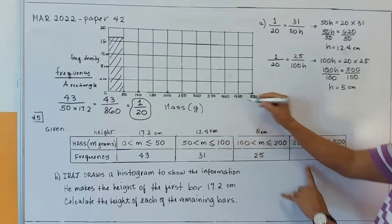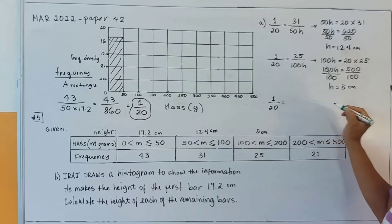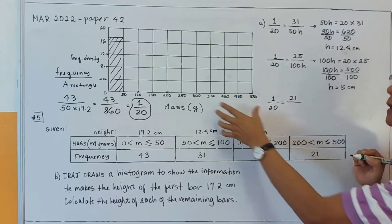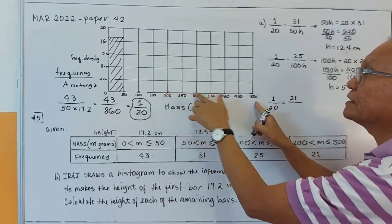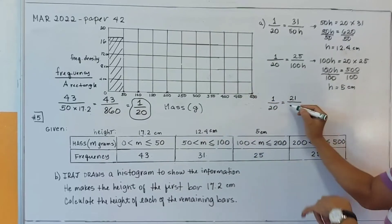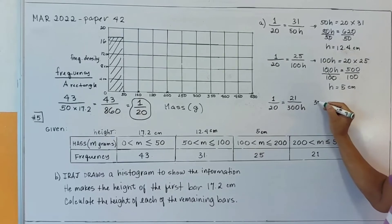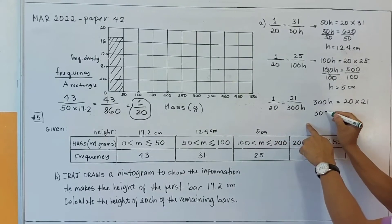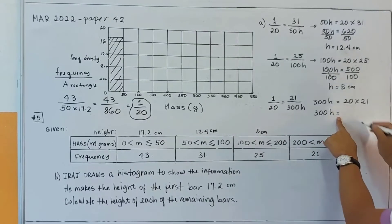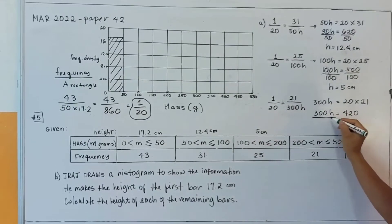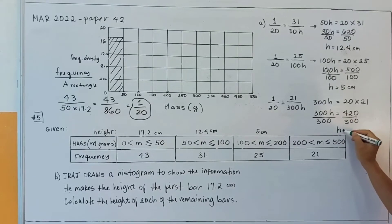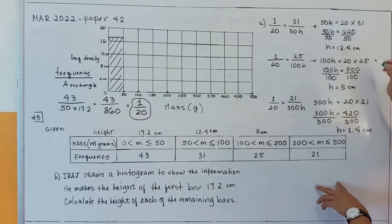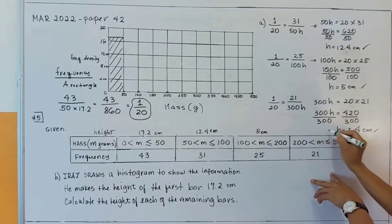For the last bar, the interval is 200 to 500, so the base is 300. Using 1 over 20 equals 21 over 300 times h, we cross-multiply: 300h equals 20 times 21, which is 420. Dividing both sides by 300, h equals 1.4 centimeters. So the last bar has a height of 1.4 centimeters.